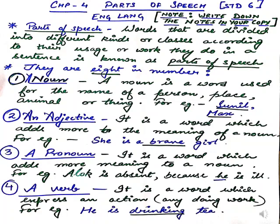What is an adjective? A word which adds more meaning to the meaning of a noun or pronoun. Like 'she' here is the pronoun, and I am adding more meaning to it by adding 'brave' to that word. She is a girl — but what kind of girl? A brave girl. So I am adding more to the noun. This is the role of an adjective.